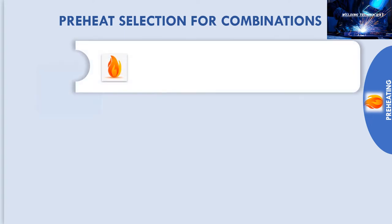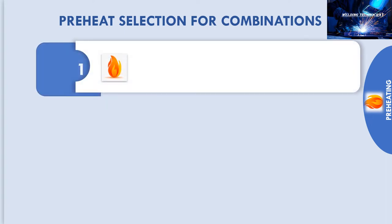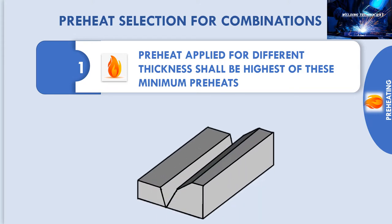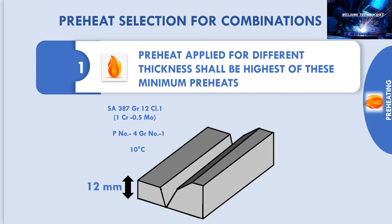The first combination is thickness. For different thickness, preheat shall be applied for the highest of the minimum preheat. For example, Part 1 is P No. 4, Group No. 1, S387, Grade 12, Class 1 — it is 1 chrome 1.5 moly of 12 mm thickness and it has a minimum preheat of 10 degree Celsius.